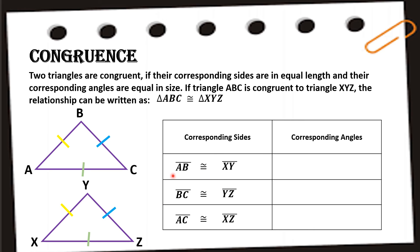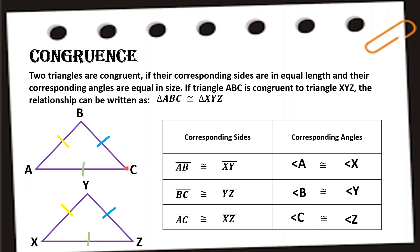The symbol (≅) is read as 'is congruent to.' For the corresponding angles, using one letter each: angle A is congruent to angle X, angle B is congruent to angle Y, and angle C is congruent to angle Z. Congruent triangles have the same shape, same angles, and same sides.